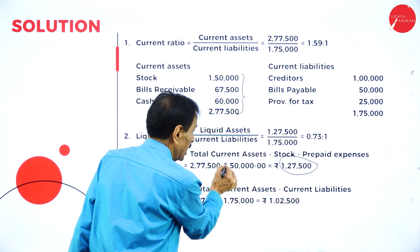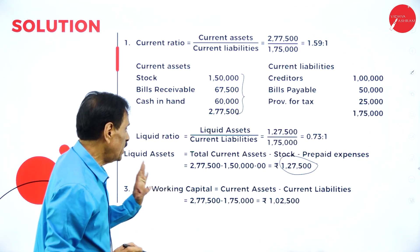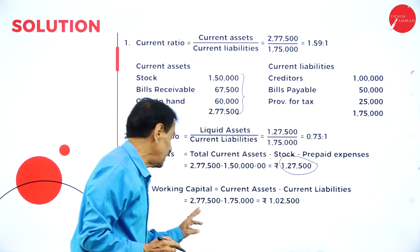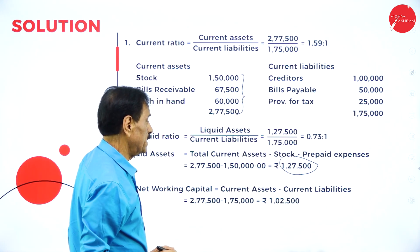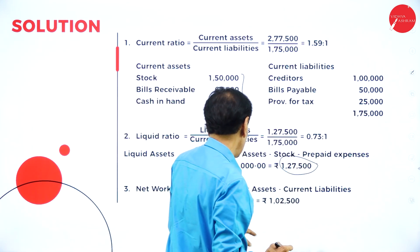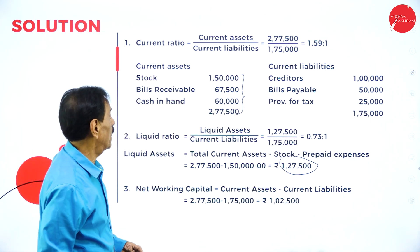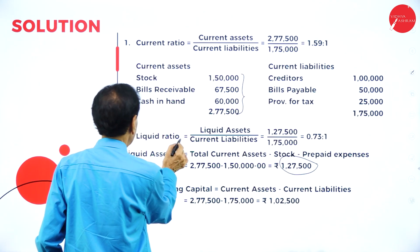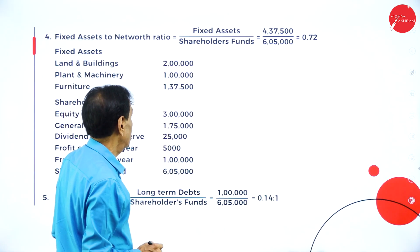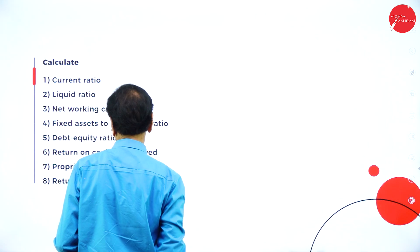Liquid asset means total current asset minus stock minus prepaid expenses. Net working capital equals current asset minus current liability. Current asset is 2,77,500; current liability is 1,75,000; net working capital comes to 1,02,500. Note that the question asks for net working capital, not the ratio.